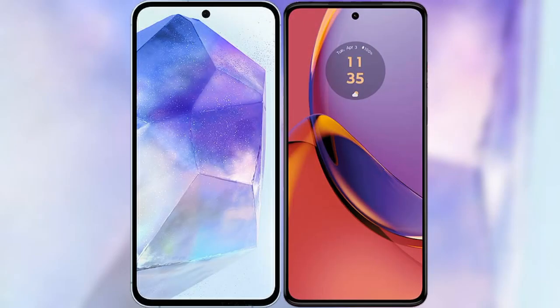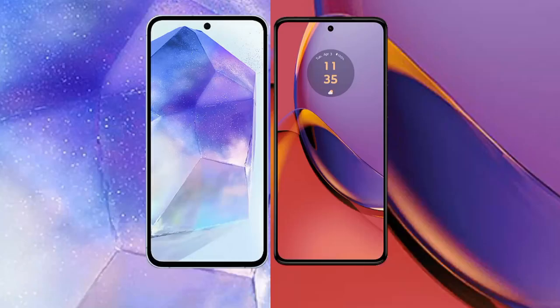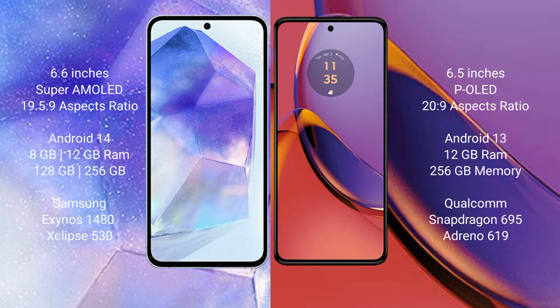We will compare the new Samsung Galaxy A55 with the Motorola Moto G84. The Samsung Galaxy A55 comes with a 6.6-inch AMOLED display and an aspect ratio of 19.5:9. The Motorola Moto G84 comes with a 6.5-inch OLED display and an aspect ratio of 20:9.